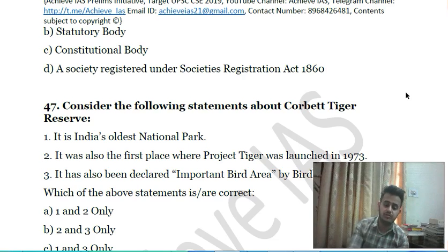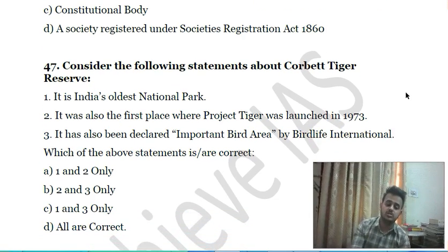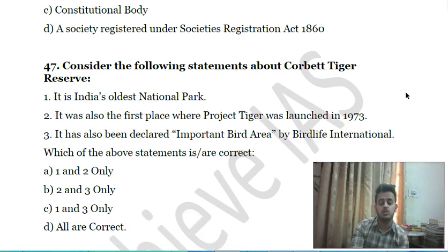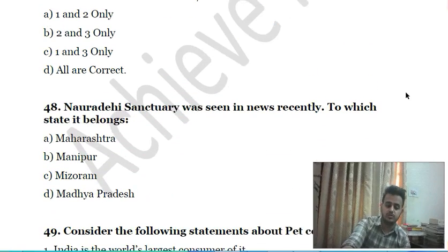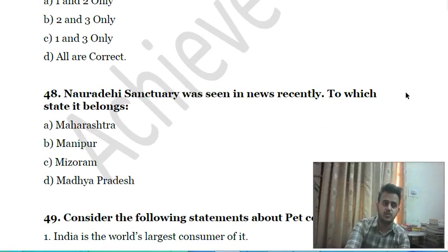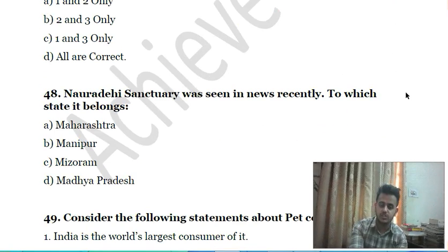Forty-sixth question: consider the following statements about Corbett Tiger Reserve — first, it is India's oldest national park; second, it was also the first place where Project Tiger was launched in 1973; third, it has also been declared an Important Bird Area by BirdLife International. Choose the correct answer.